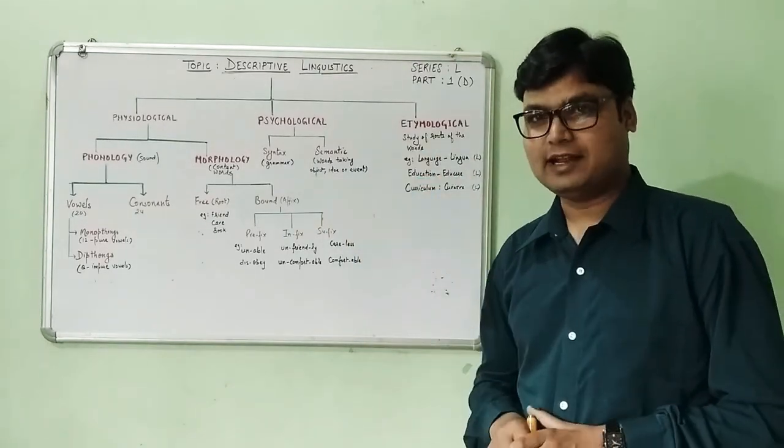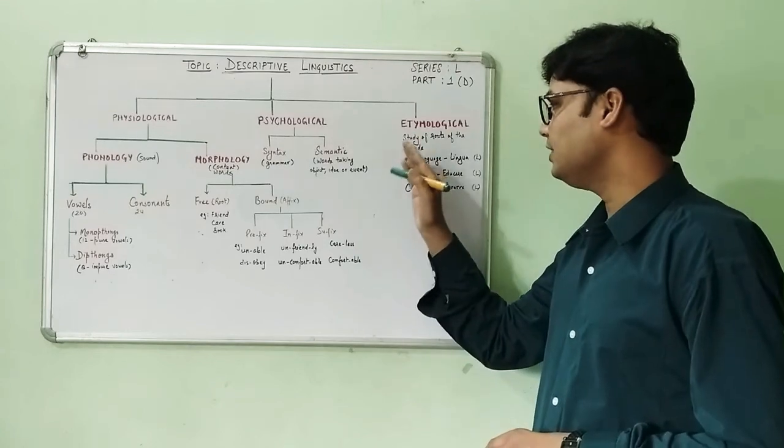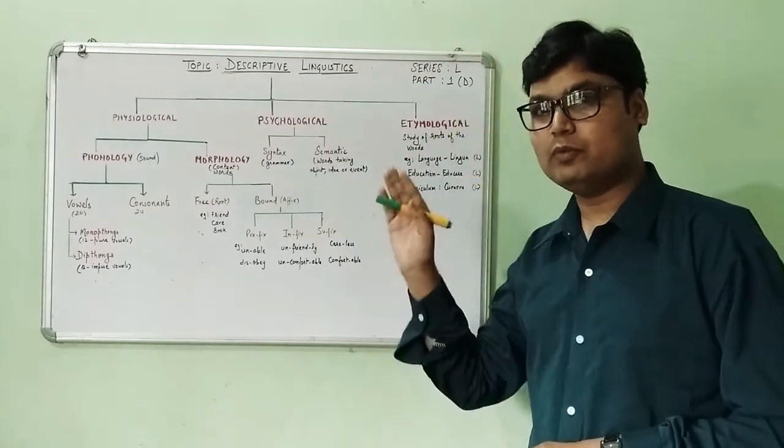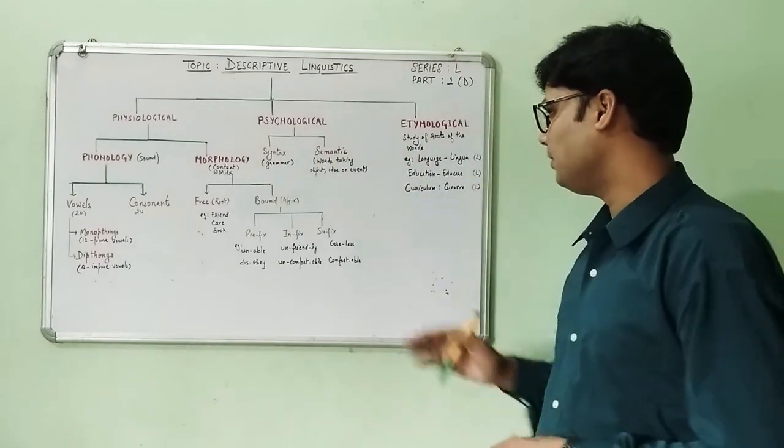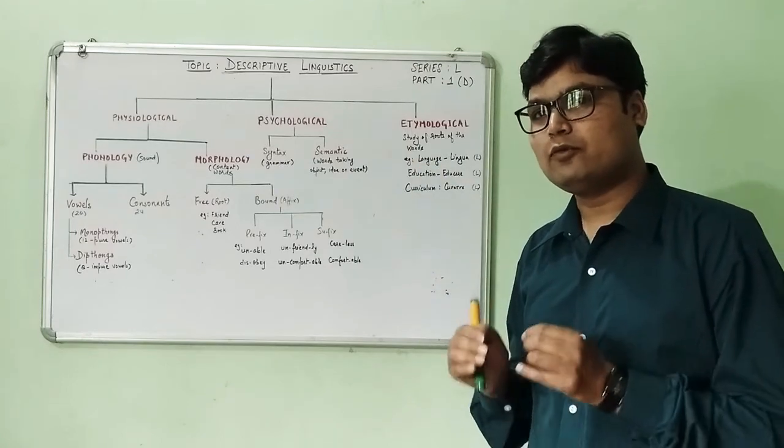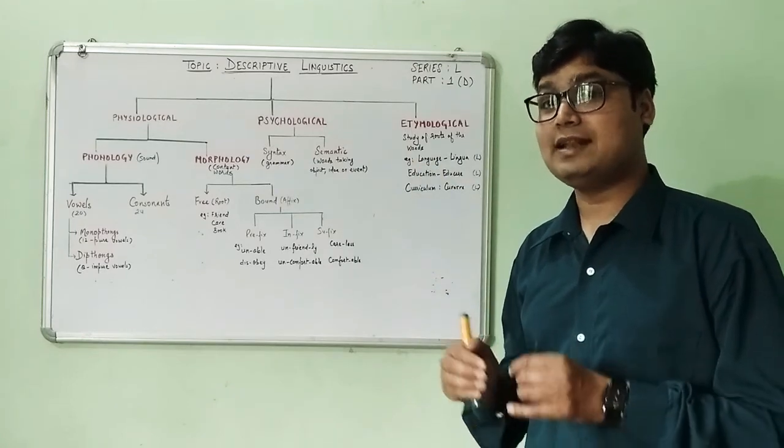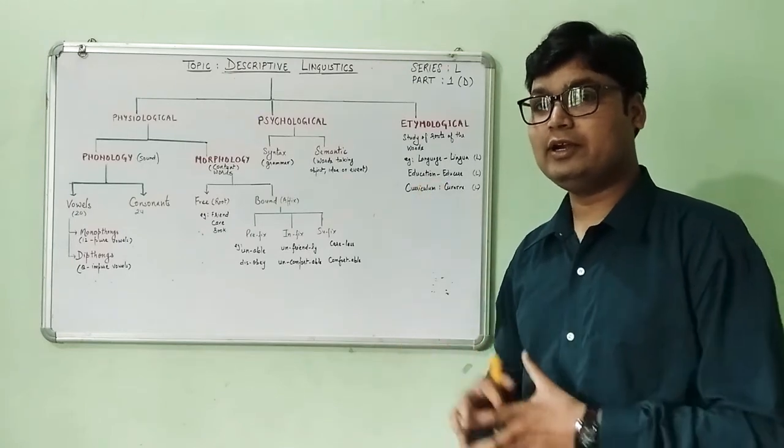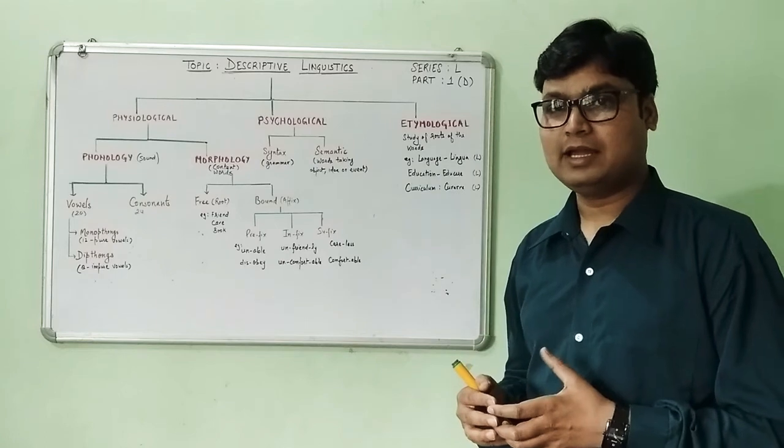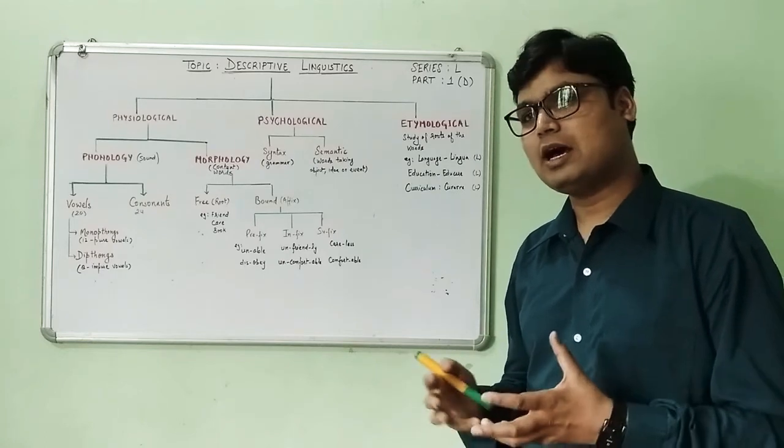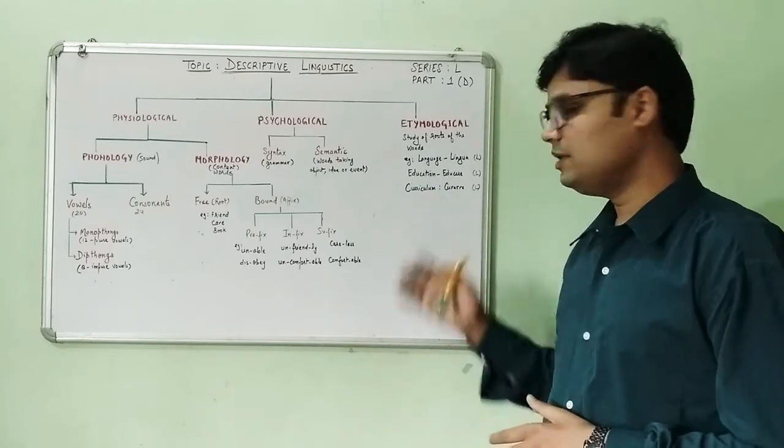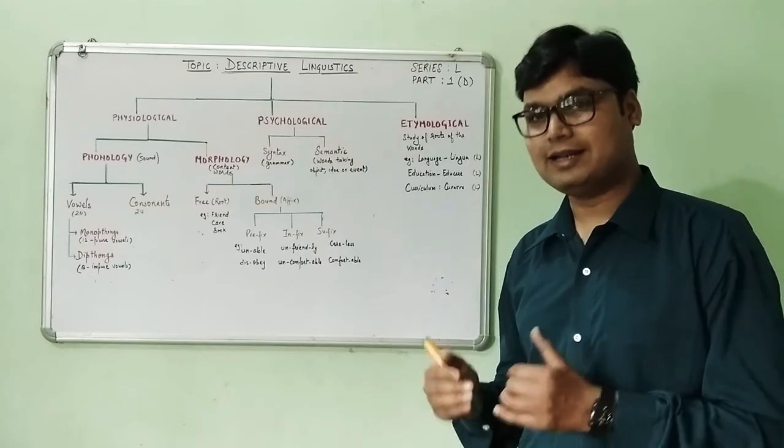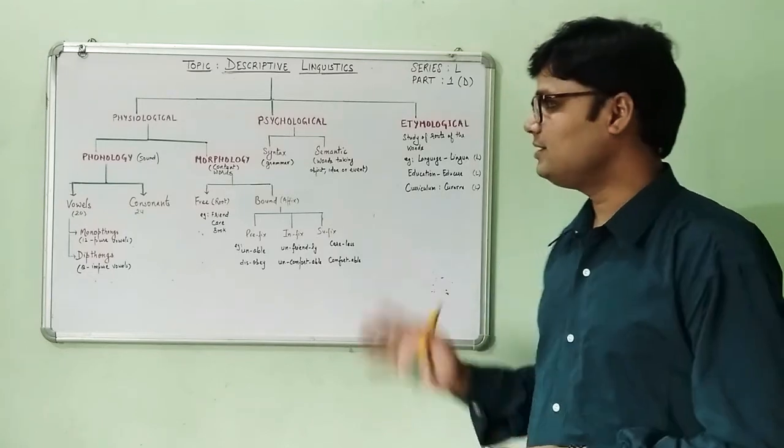Finally we come to the last aspect, the etymological aspect, which is concerned with the study of roots of words. For example, the word 'language' comes from the root word 'lingua' which is a Latin word. Similarly, 'education' comes from 'edusere', 'educatum' and 'educate' which again all are Latin words. And similarly, 'curriculum' comes from the Latin word 'curani'.